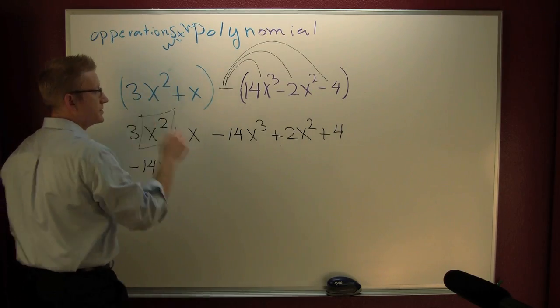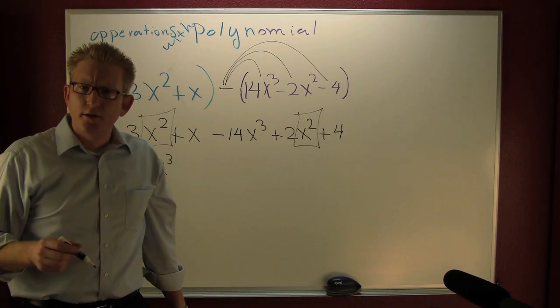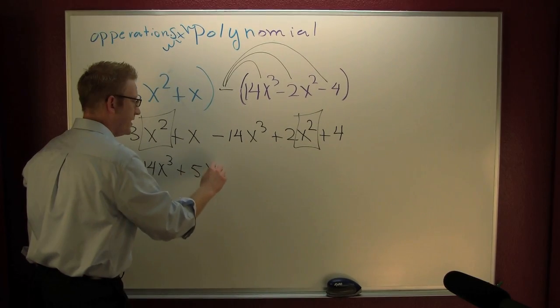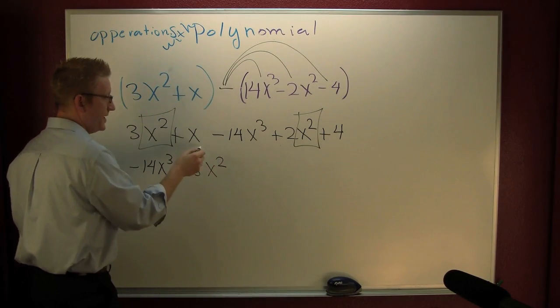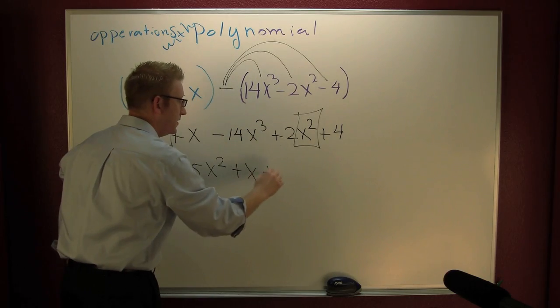Here I got a couple of squares. 3 and 2? 5. Plus 5x squared. And then my constant plus x, plus 4.